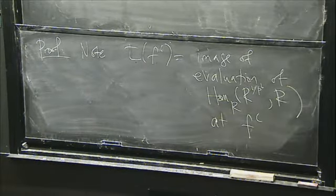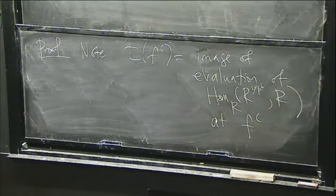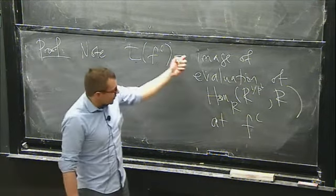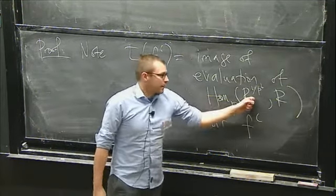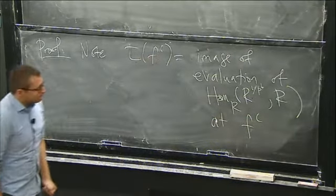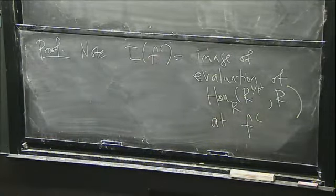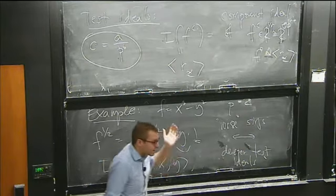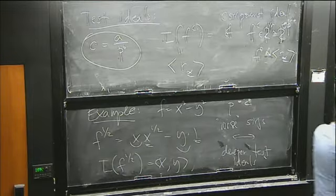Another way to write τ(f^c): I'm trying to pick out all the components. If I write R^{1/p^b} in terms of its components and I want to get the components, what I do is hom that into R and take the dual basis vectors, which spits out all of the entries. So another way to think about this is the image of the evaluation map from Hom_R(R^{1/p^b}, R) evaluated at f^c — that just picks out the components.